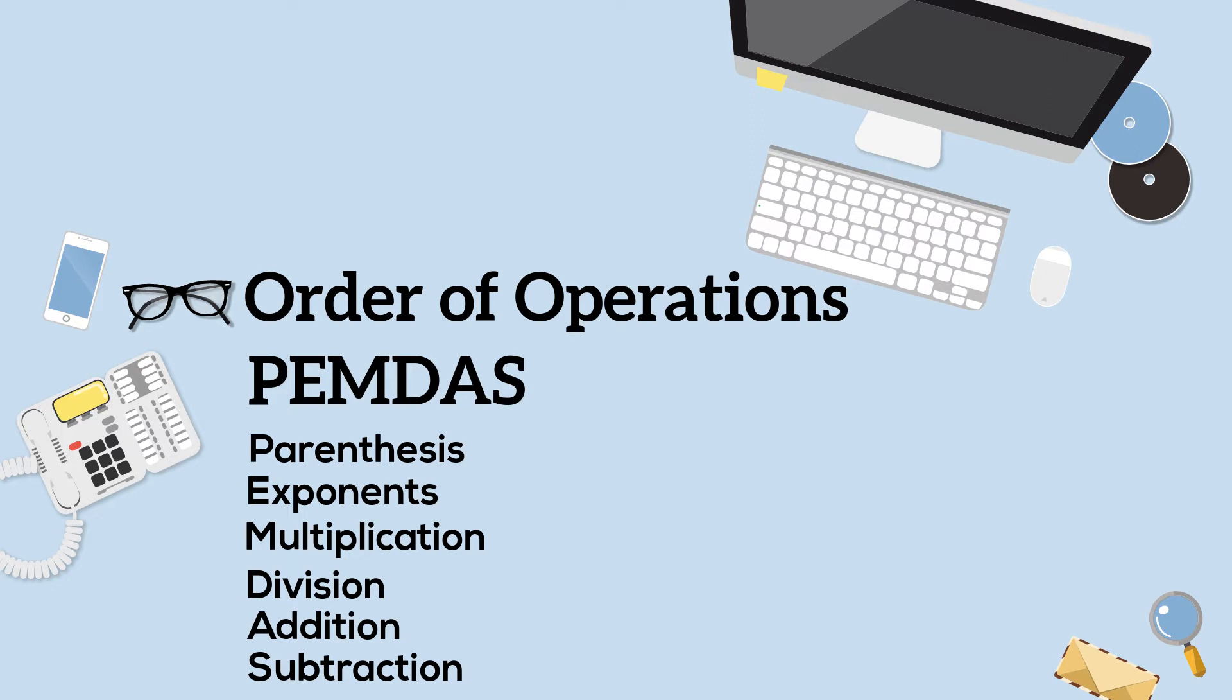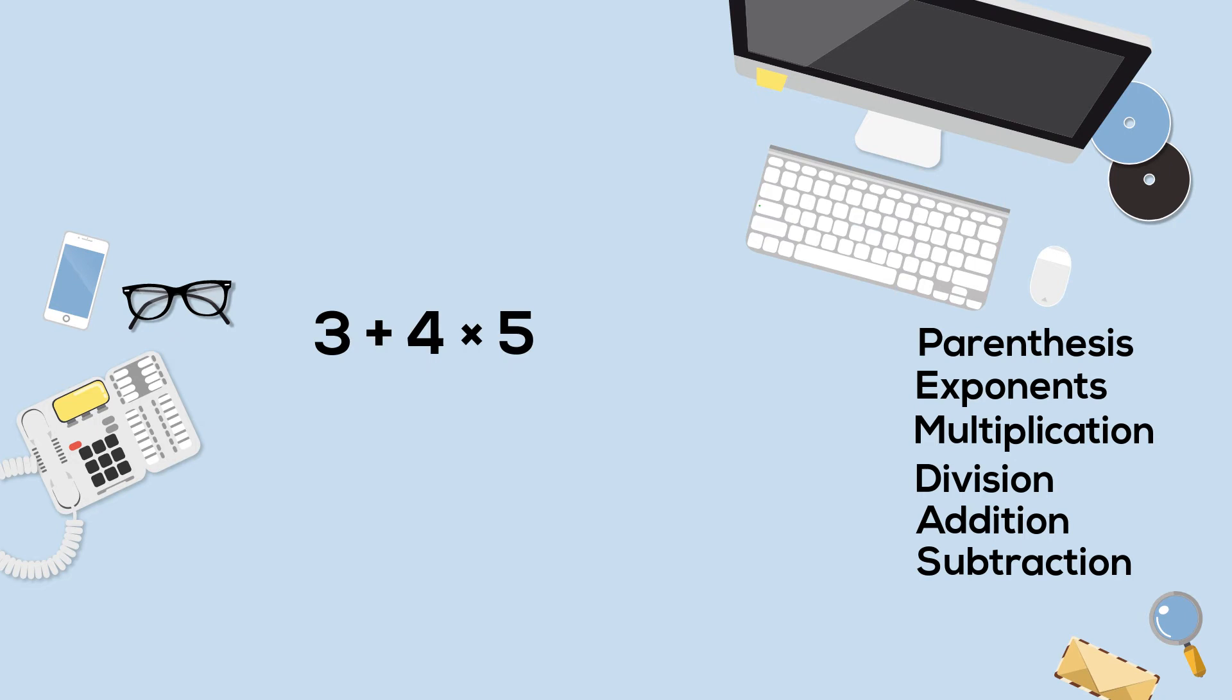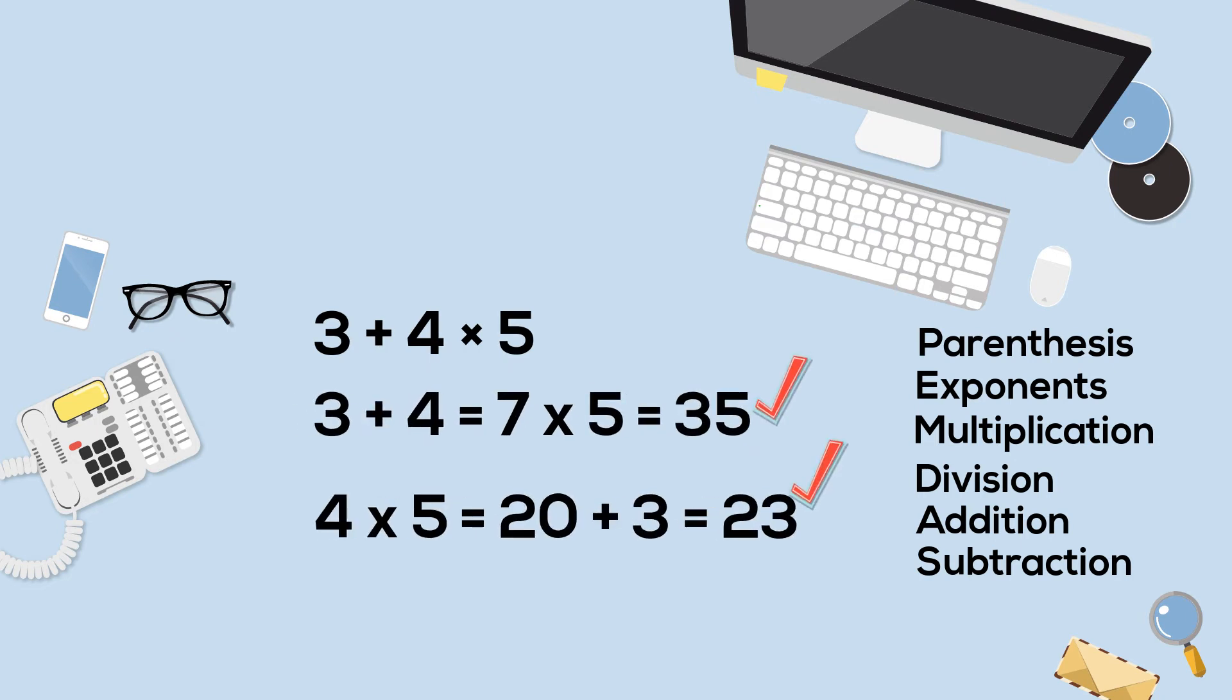Let's look at an example and see if they follow the correct order of operations. Which of these two answers are correct, 35 or 23? The first one, you have 3 plus 4, which equals 7, times 5, equals 35.